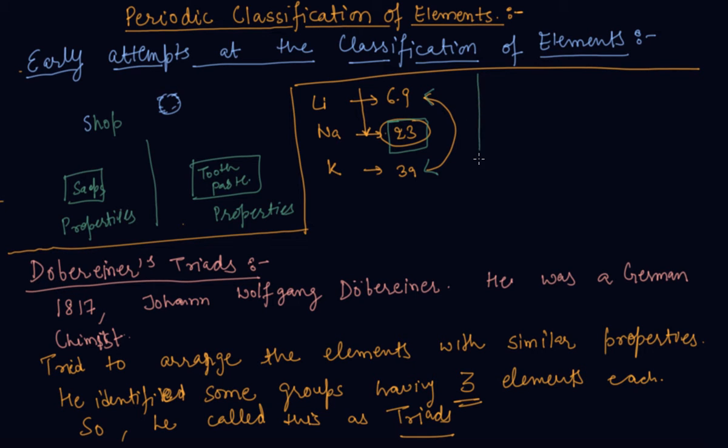More triads were like nitrogen, phosphorus, and arsenic. The atomic masses are like 14, 31 and 74.9. What he tells is the middle element is the average of these two extreme elements. These are the triads.